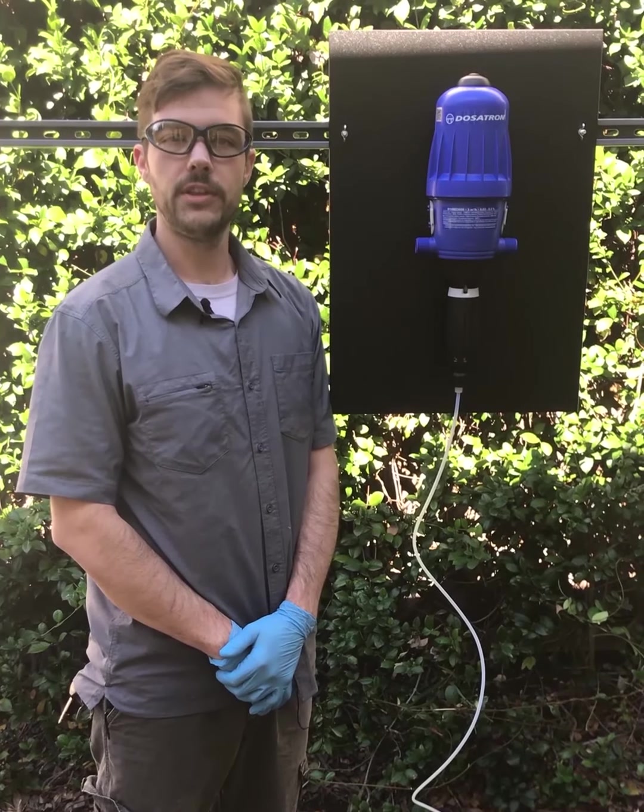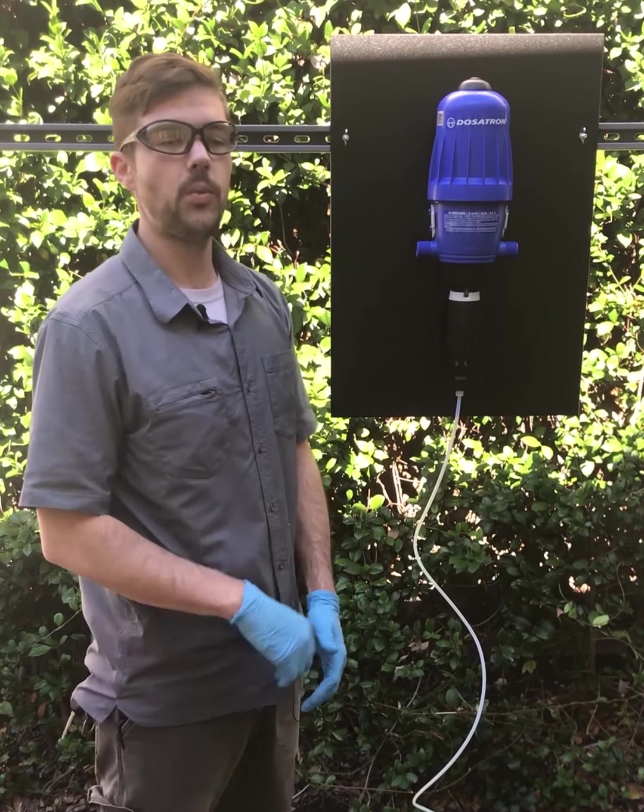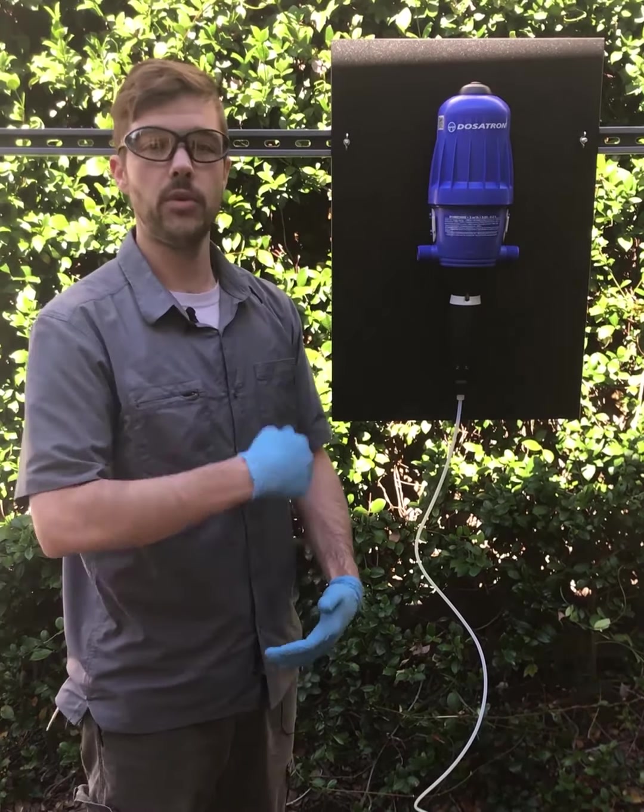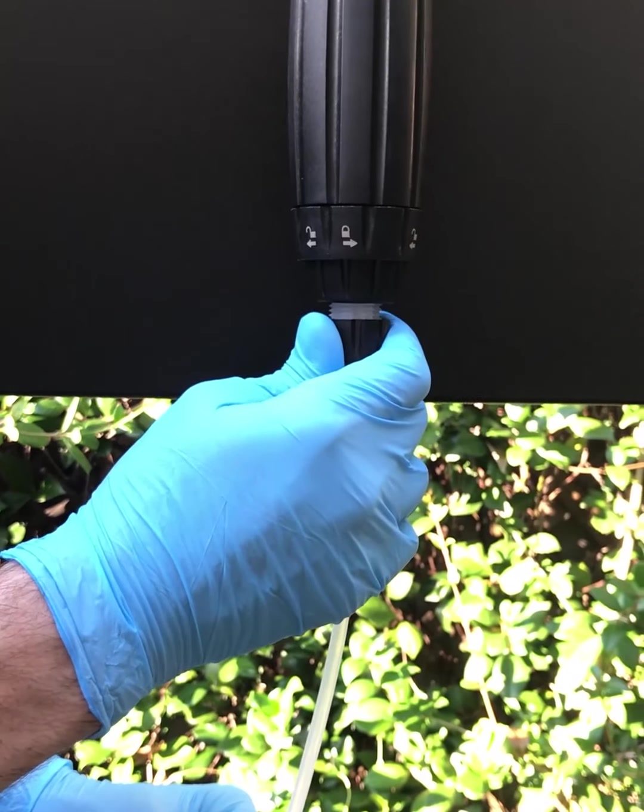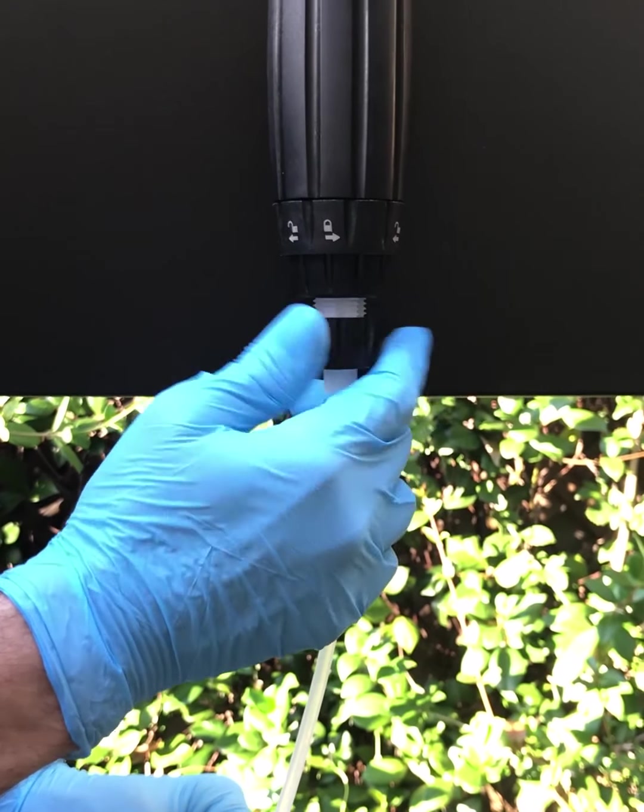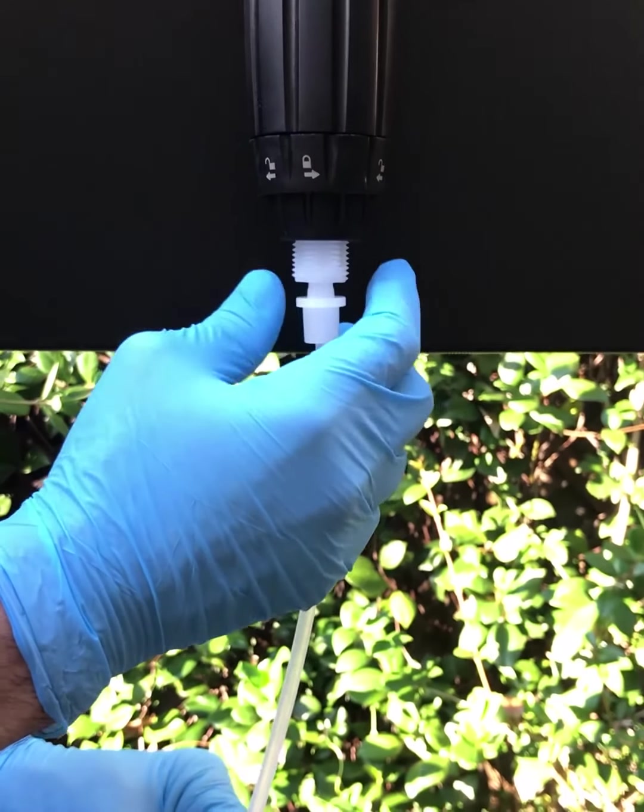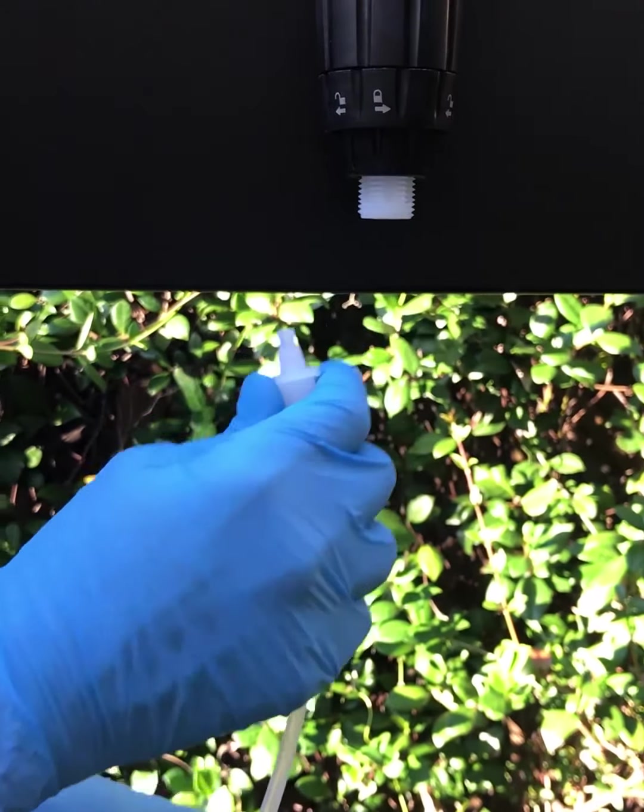Before doing any service on the unit, shut the water off upstream or before the unit and relieve the pressure in the line after. To remove the hose assembly, simply loosen the hose nut and pull down on the ferrule and hose, removing from the unit.